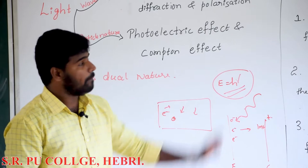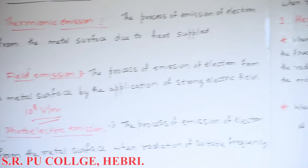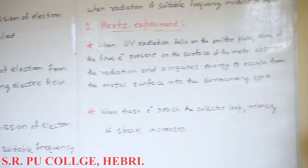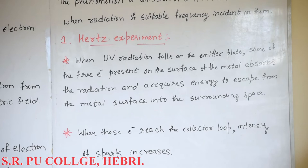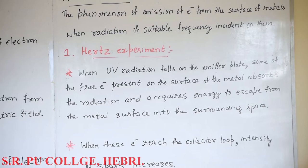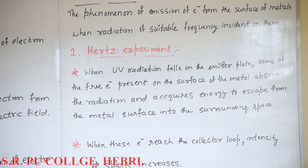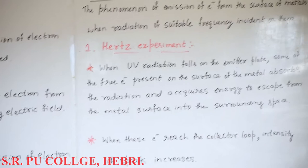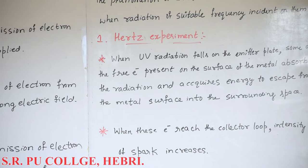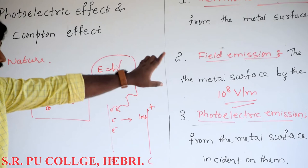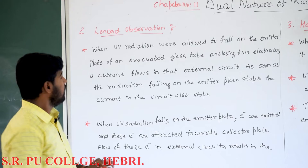Photoelectric effect: the phenomenon of emission of electron from the metal surface when radiation of suitable frequency is incident on them is known as the photoelectric effect. The first observation is made by Hertz experiment. When UV radiation falls on the emitter plate, some free electrons present on the surface of the metal absorb the radiation, thus acquiring energy to escape from the metal surface into the surrounding space. When the same electrons reach the collector plate potential, the intensity of the spark at the gap increases. That is the second experimental result made by Hertz. The second observation is known as the Lenard observation.